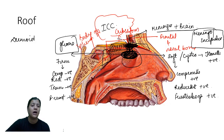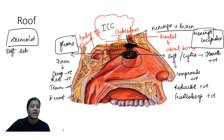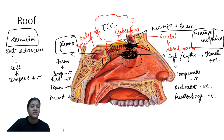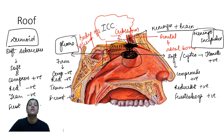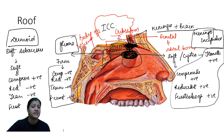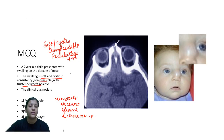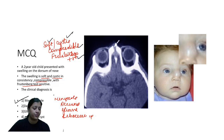A dermoid is a hamartoma occurring at the line of fusion of bones. It has soft, cheesy, sebaceous or toothpaste-like material within it, containing all three layers — ectoderm, endoderm, and mesoderm. It is soft but not cystic. So compressibility test is positive. Since it does not communicate with any cavity, reducibility test is negative. Transillumination is negative because it is not cystic. Frustenberg test is negative because it does not communicate with the intracranial cavity. Summary: all tests positive — meningocele; all tests negative — glioma; only compressibility test positive, rest negative — dermoid. In this question: soft, cystic, compressible, Frustenberg test positive — the answer is meningocele.